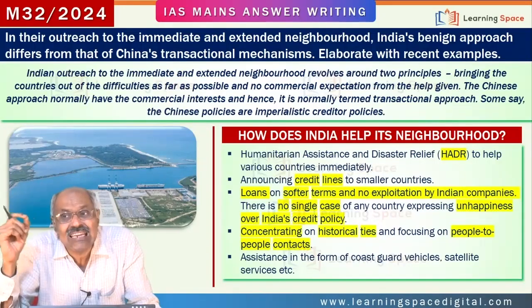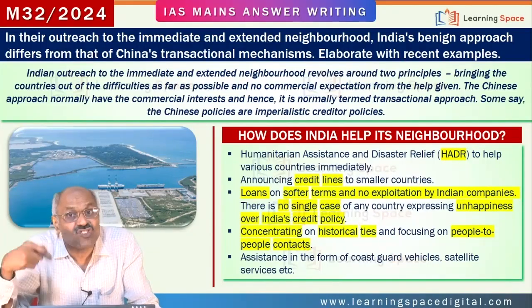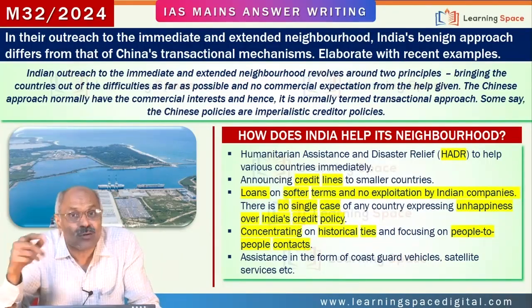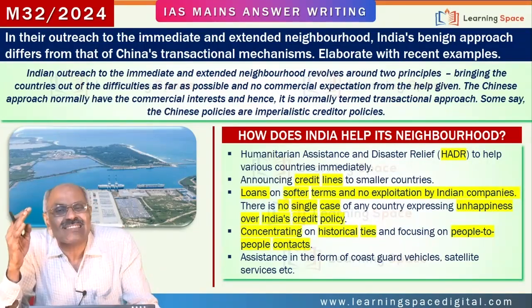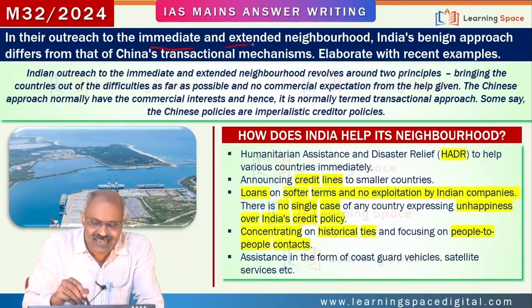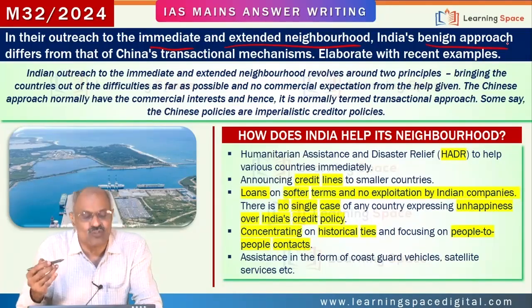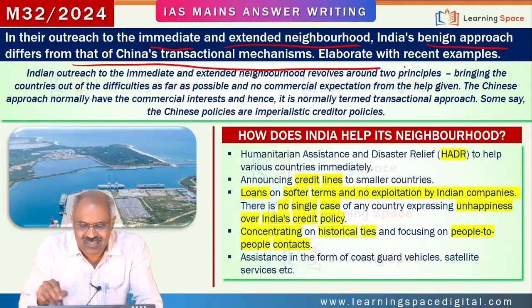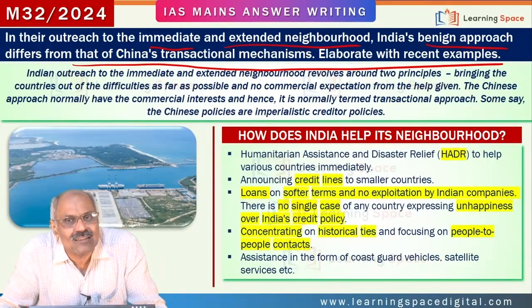If you look at India and China in their approaches to the immediate neighborhood outreach and extended neighborhood outreach, there is a contrasting picture. The question is: in their outreach to the immediate and extended neighborhood, India's benign approach differs from that of China's transactional mechanisms. Elaborate with examples.